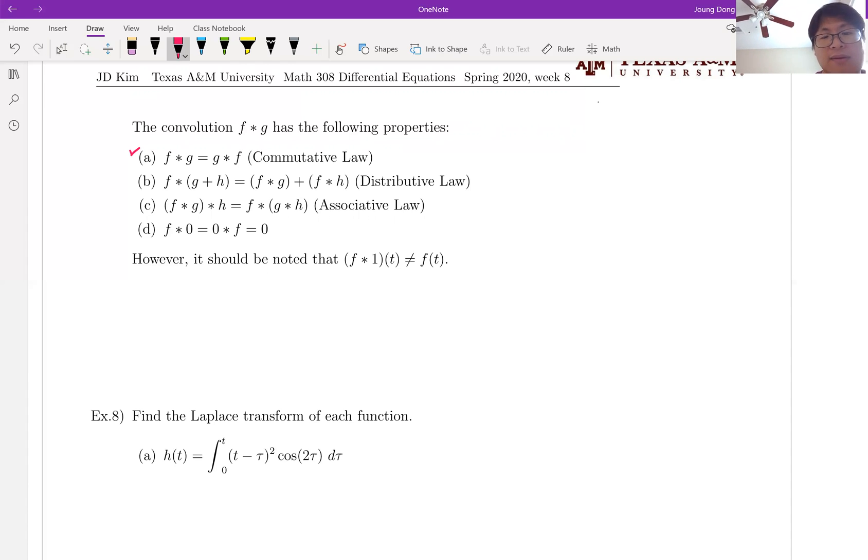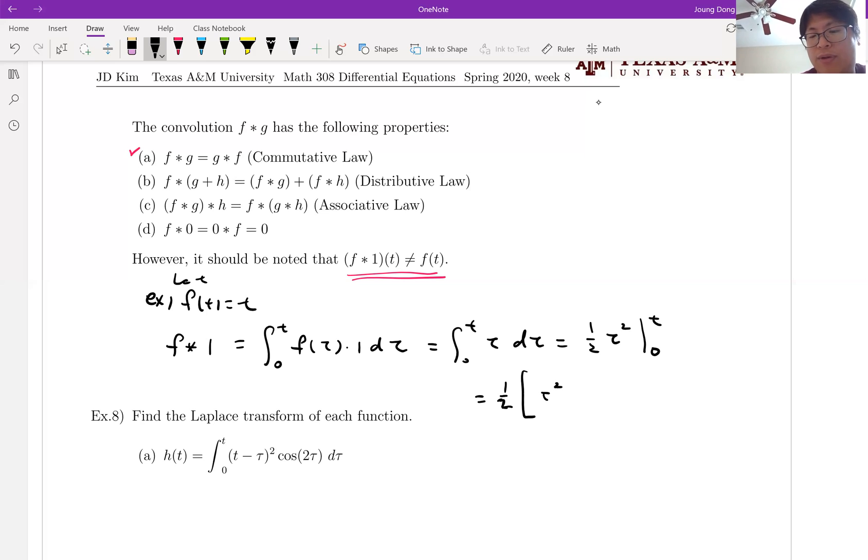But the very last one, do you know what that is? It is identity. There's no identity. So I can just simply give you the counter example. If I say your function F(t) is t, then let me do the convolution. F star with one is equal to integral F of tau times one d tau, which is zero to t, tau d tau. It is one half tau square and we are putting zero and t equal to one half t square outside. Plug in t square minus zero, that is one half t square. Definitely this is not equal to t. So there's no identity for the convolution integral.